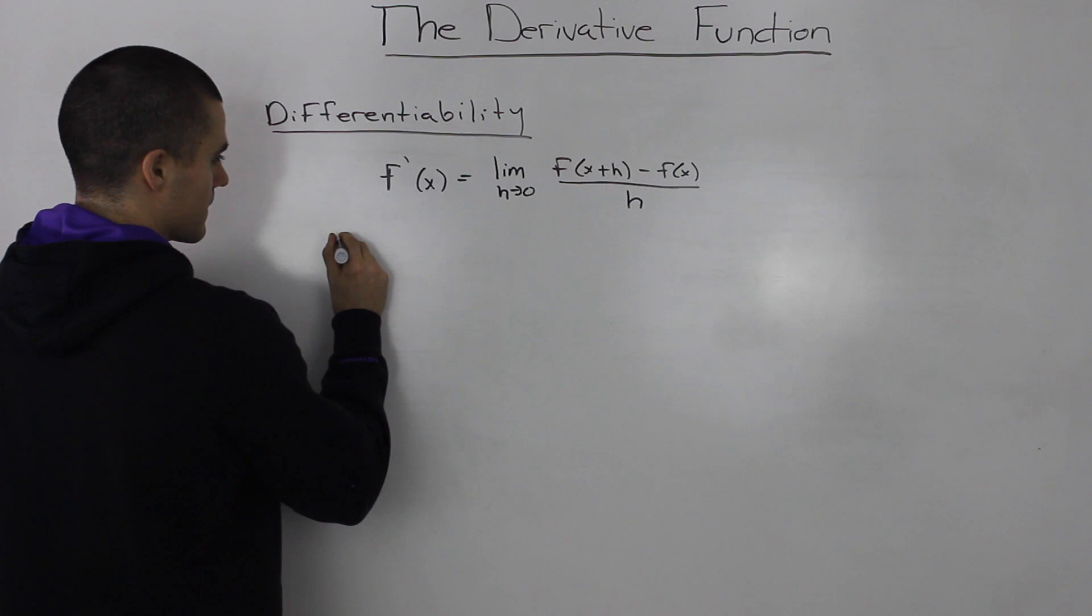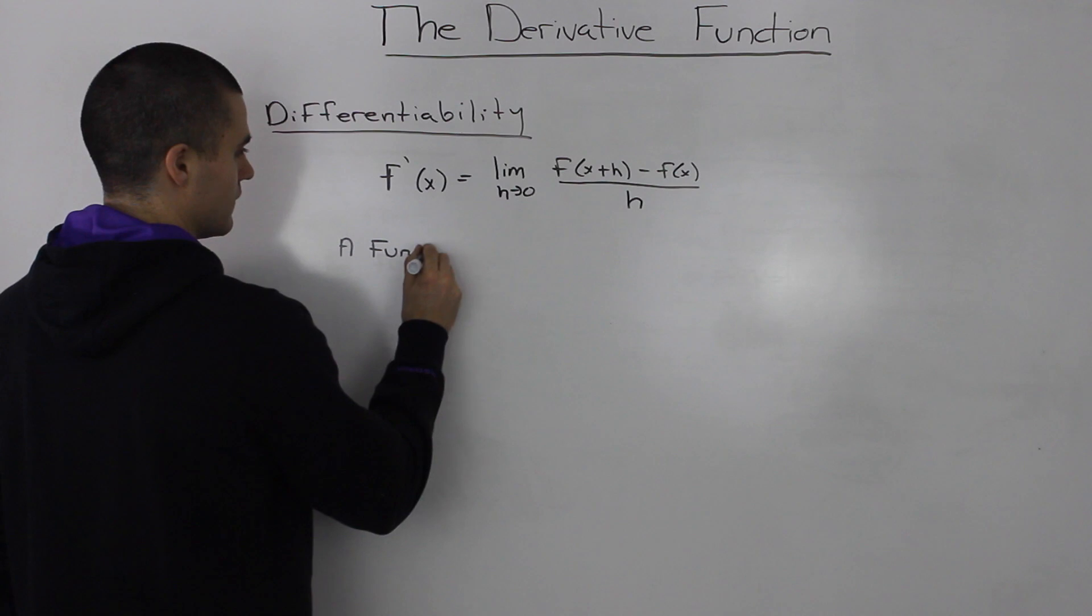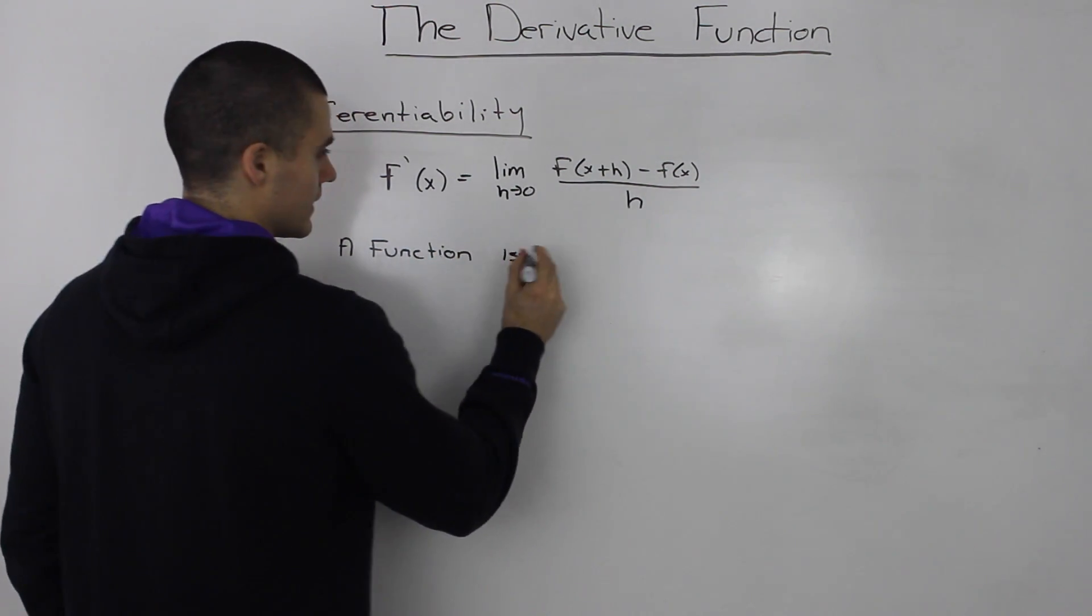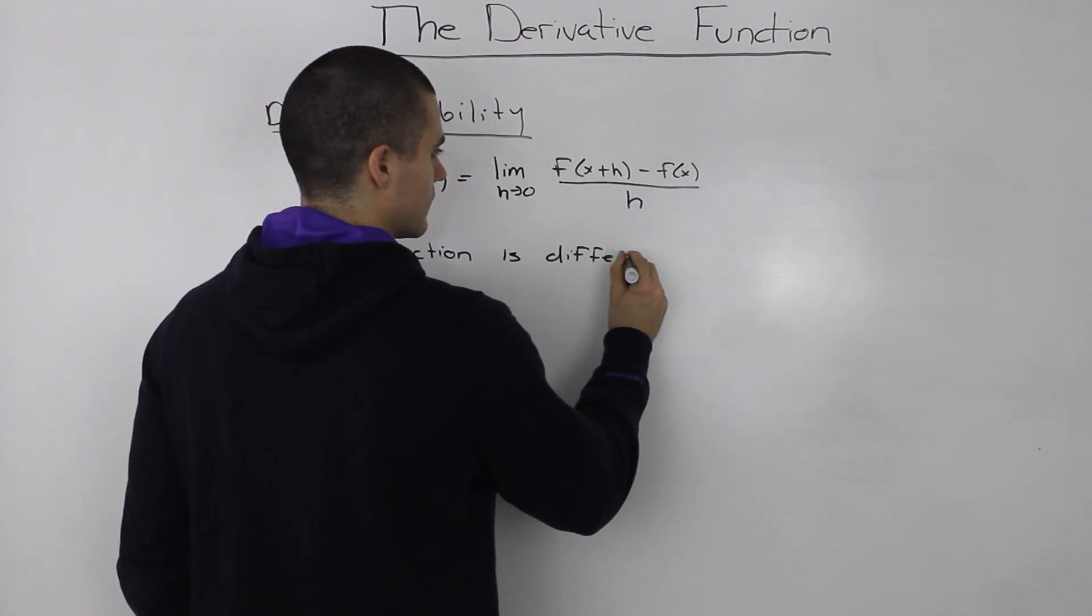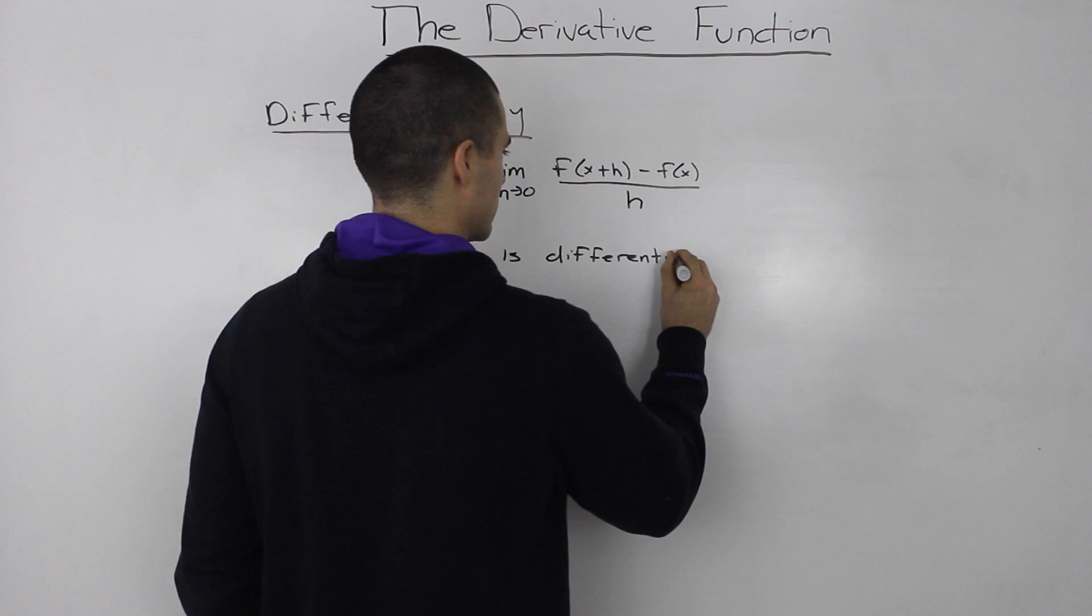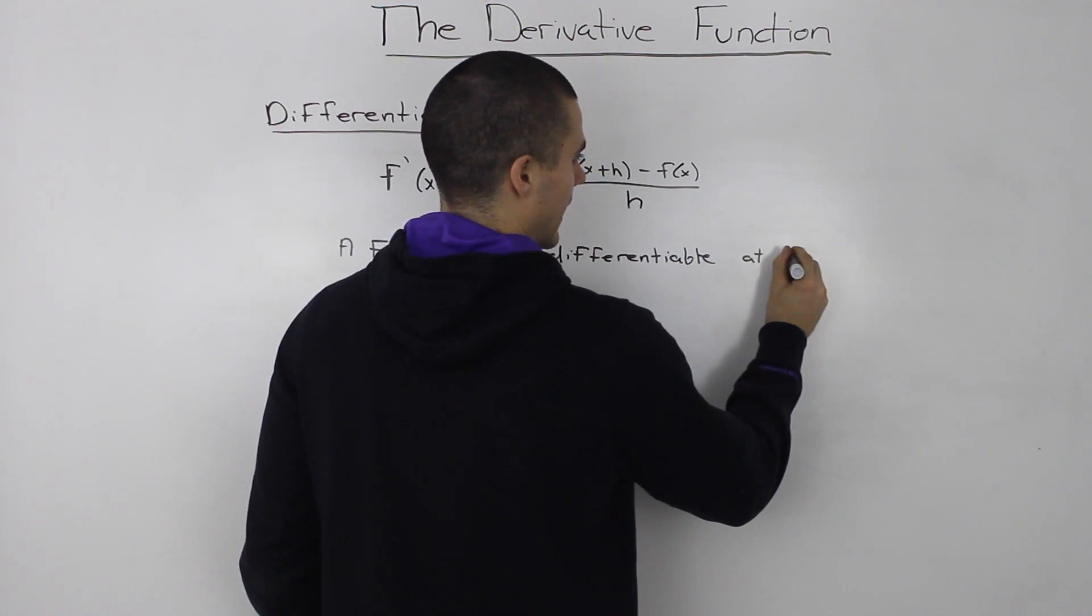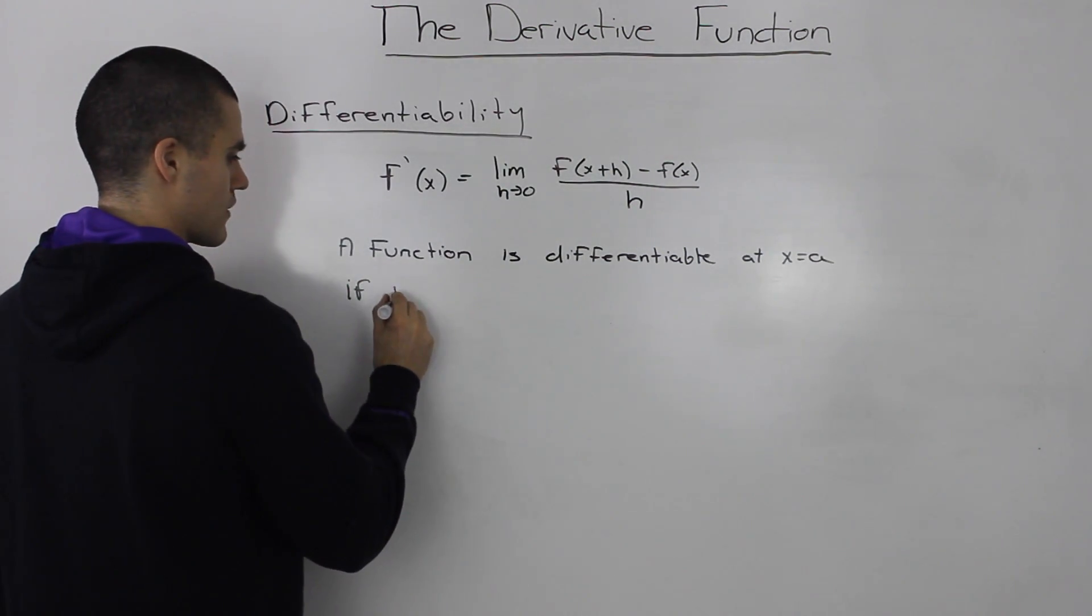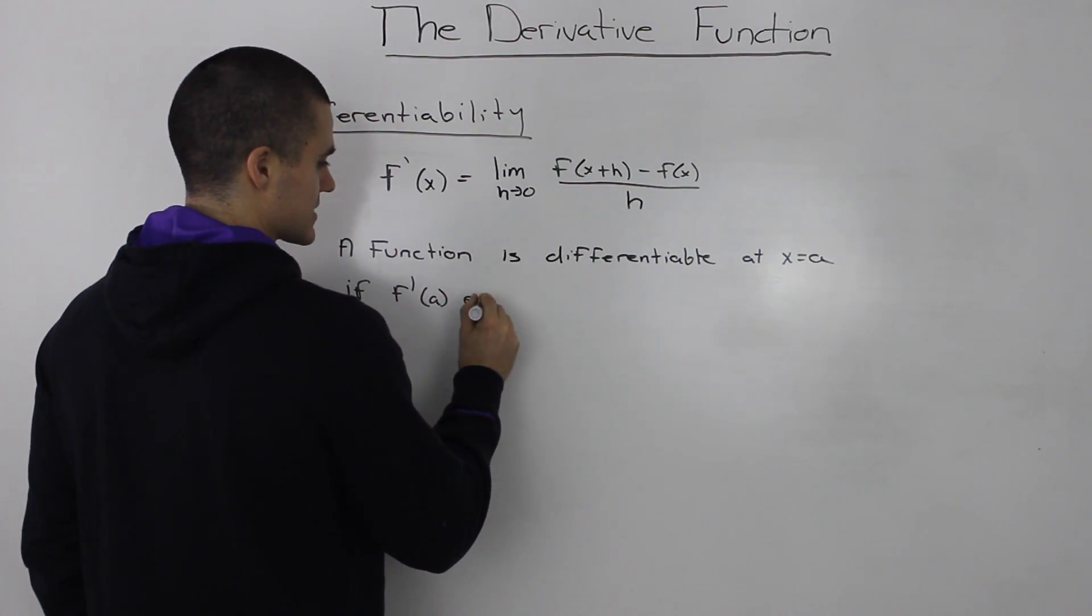So a function is differentiable at x equals a if the derivative at point a exists.